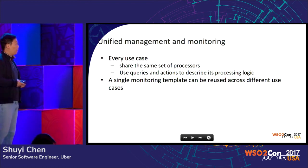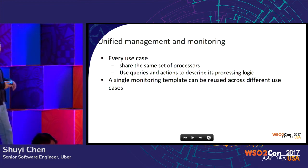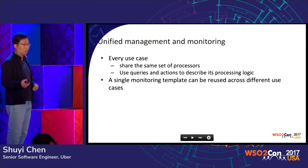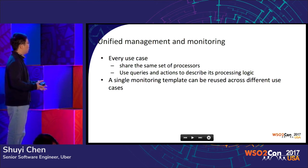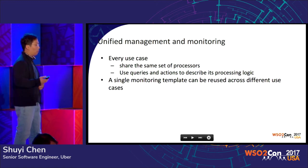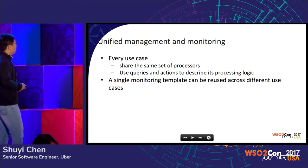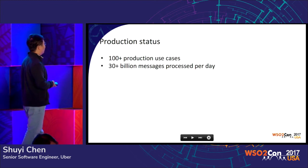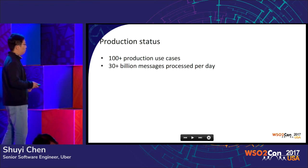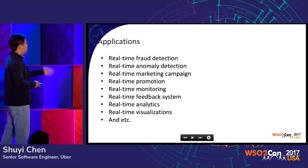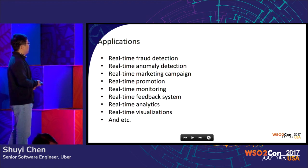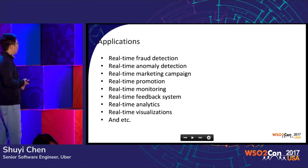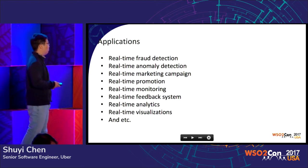Because every use case shares the same set of processors, we can use a single monitoring template to monitor across all different use cases. Currently, we have about 100-plus production use cases, processing 30-plus billion messages per day in real time. This has been applied to fraud detection, alarm detection, marketing campaigns, promotions, monitoring, feedback systems, analytics, and visualizations.